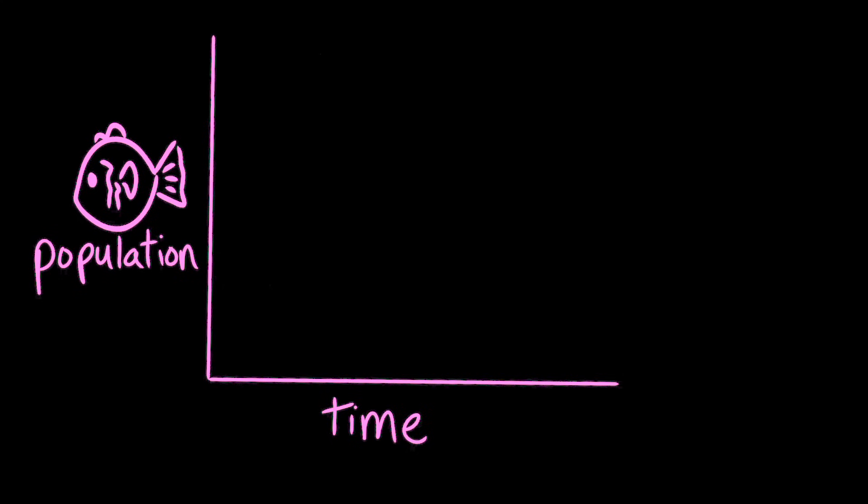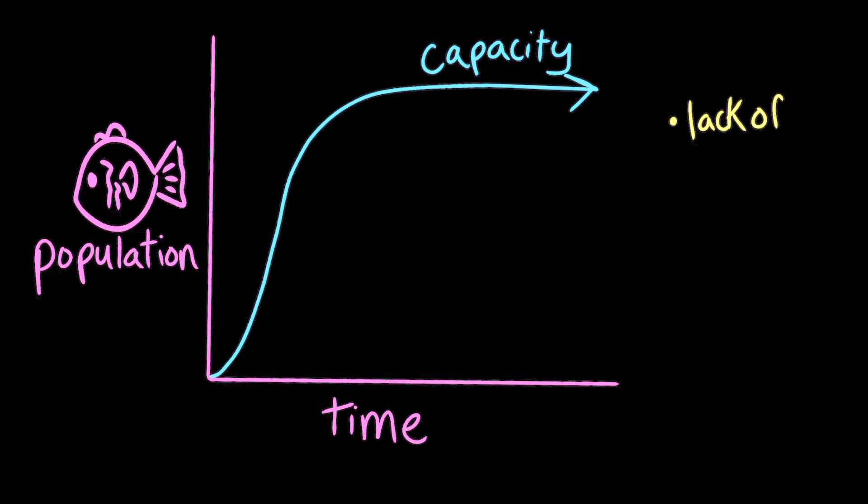If you fish less than the maximum sustainable yields, then the fish population will grow exponentially until they reach the maximum capacity that the ecosystem can support. Some of the fish will eventually die from density-dependent factors like lack of food and disease.